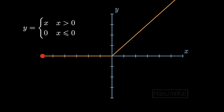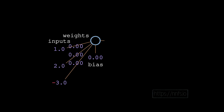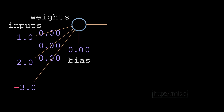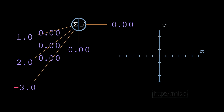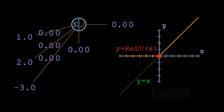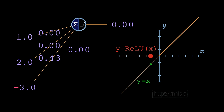This brings us to the rectified linear unit, or ReLU, activation function. It's extremely simple: if x is greater than zero, the output is x; if x is less than or equal to zero, the output is zero. Like sigmoid, ReLU provides a granular output — it just can't go below zero. Weights and biases can still produce that granular output through sign flipping and offsetting.